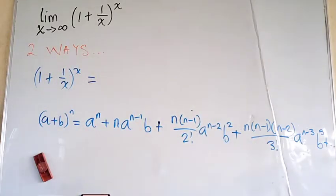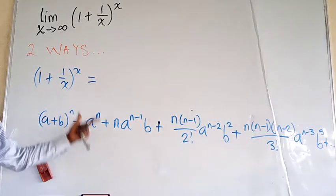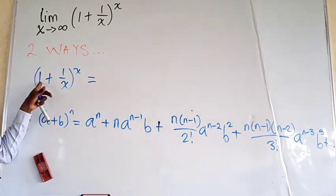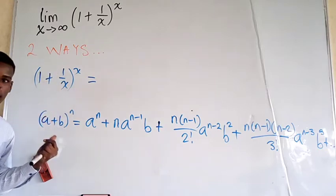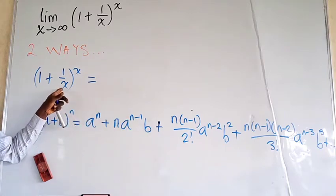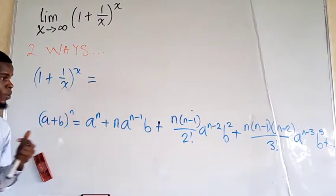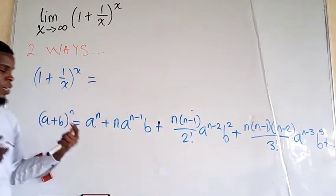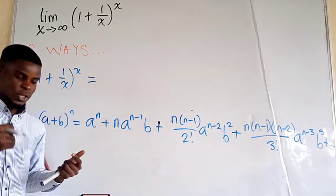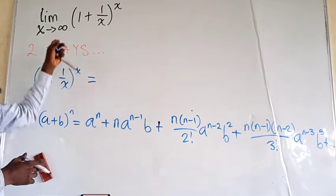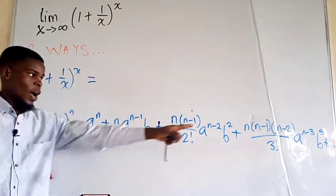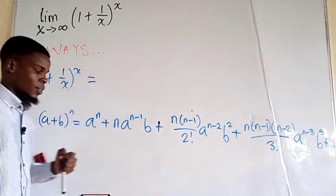Applying this to our function, we identify a = 1 and b = 1/x, with power n = x. The power of 1 reduces from x while the power of 1/x increases from zero. Since x tends to infinity, the expansion will have infinitely many terms, so we write dot-dot-dot at the end.